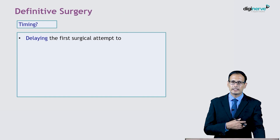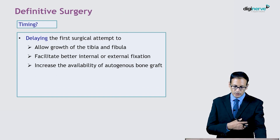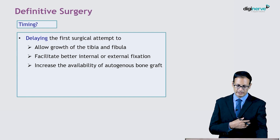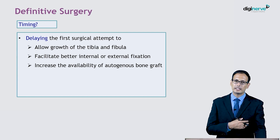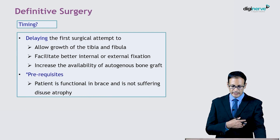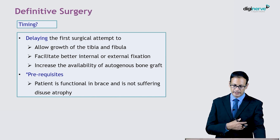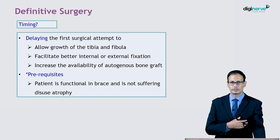Why are we trying to delay the first attempt of surgery? This is to allow the growth of tibia and fibula, to facilitate better internal fixation, and to allow increased availability of autogenous bone graft. The pre-requisite is that the patient is functional on a brace and is mobilized, and is not suffering from disuse atrophy.